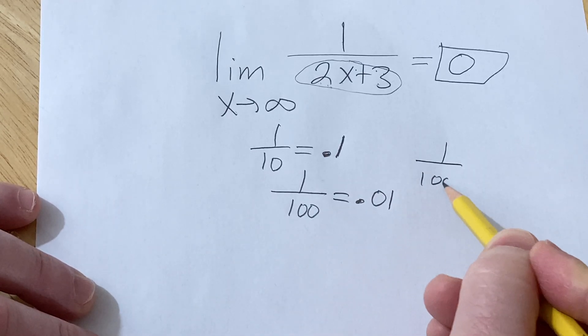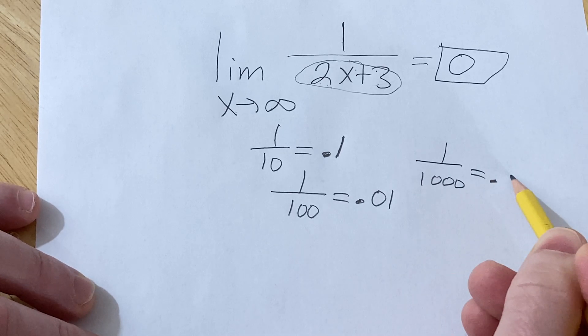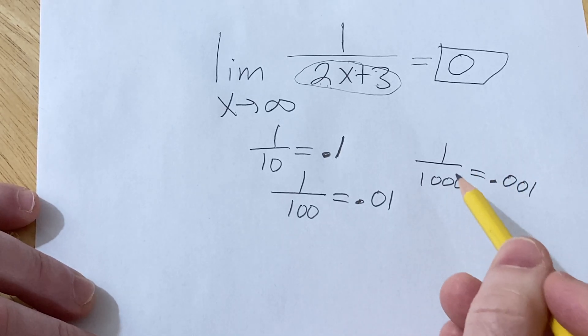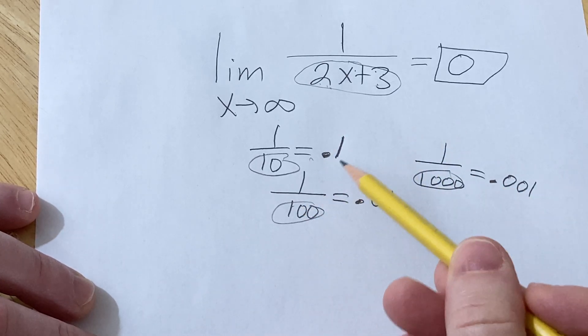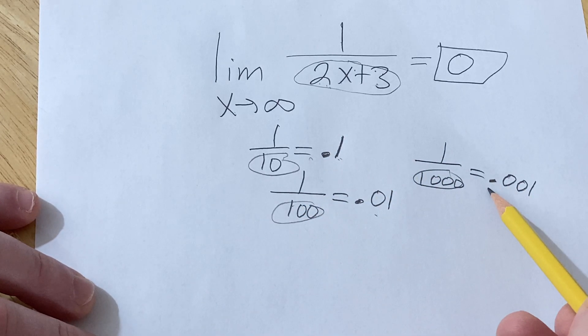If you have 1 over 1,000, that's 0.001. And you can see, as the number on the bottom becomes bigger and bigger, the fraction itself becomes smaller and smaller.